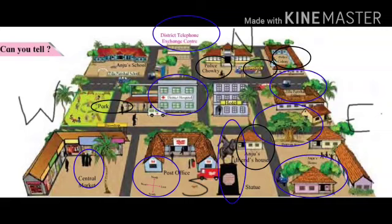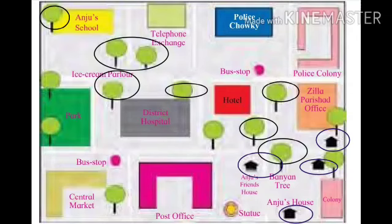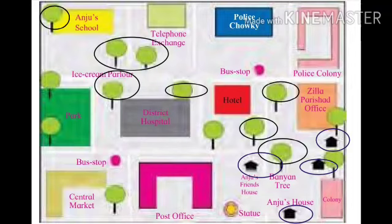Let us see the next picture. You can see the same diagram, but now using symbols — here you can see Anju's house etc. All these things that were in the earlier picture are now shown in the form of symbols. Using symbols, we have done the same picture. So this picture has become a sketch. These pictures are related to each other, but everything is now in the form of symbols. Trees and houses have their own special symbols.